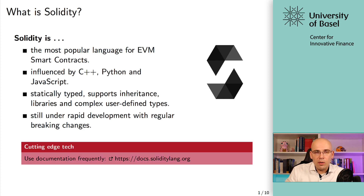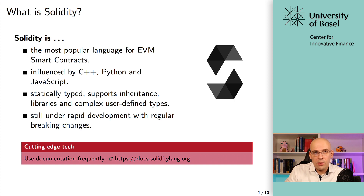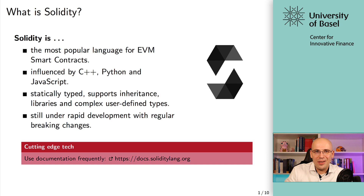If you want to look at the most recent version of Solidity, you can use the user documentation at docs.soliditylanguage.org. Much of what you're seeing in this lecture, many of the definitions, are based on this documentation — it's a really good documentation, and there will be occasional references to it. I highly encourage you to look at and read through it, especially once you want to do more sophisticated smart contracts.